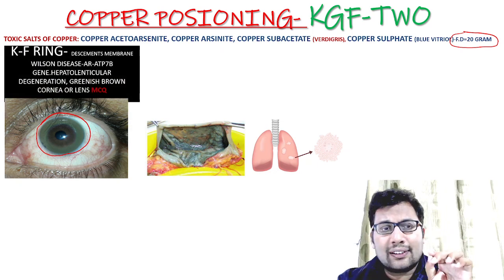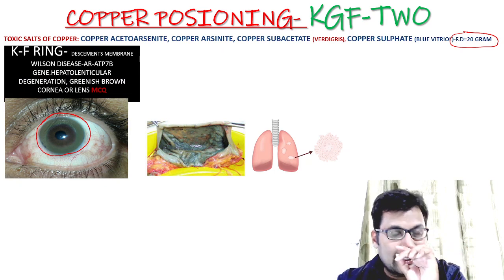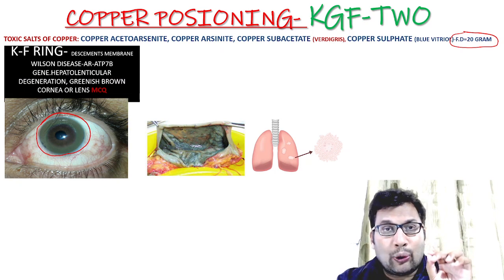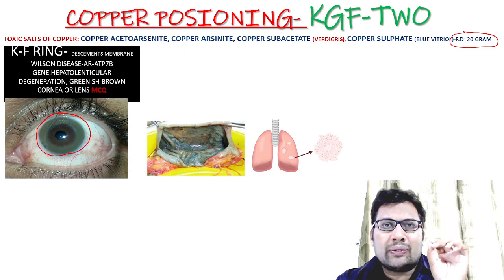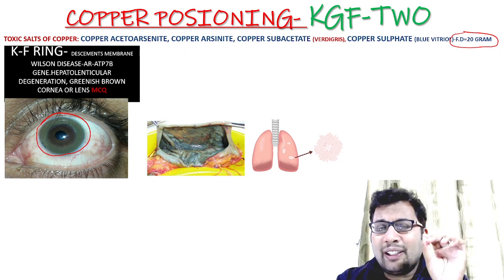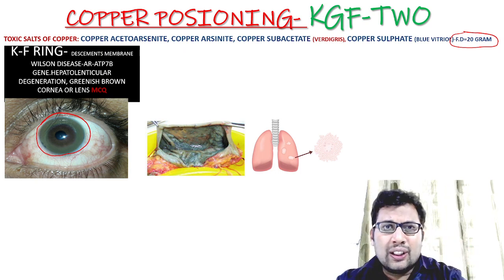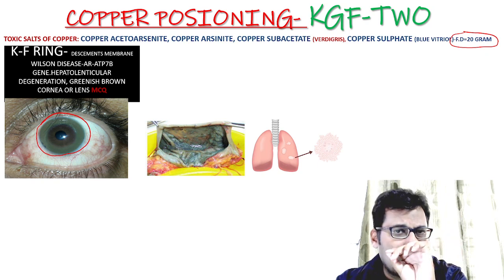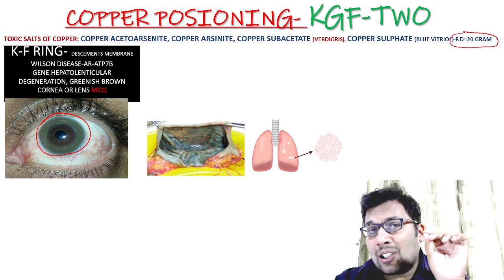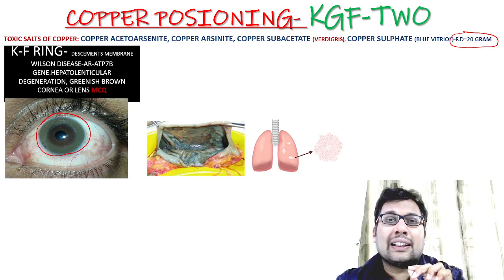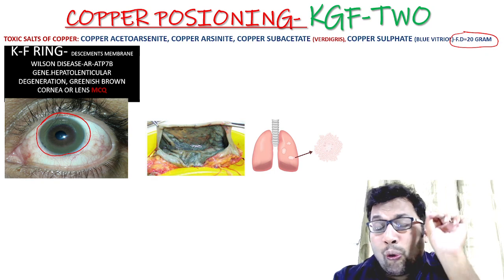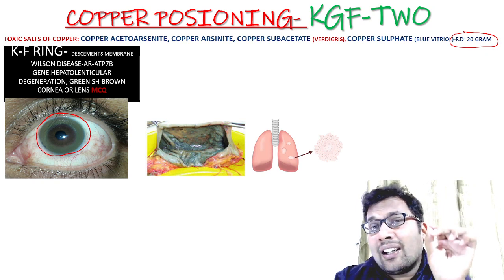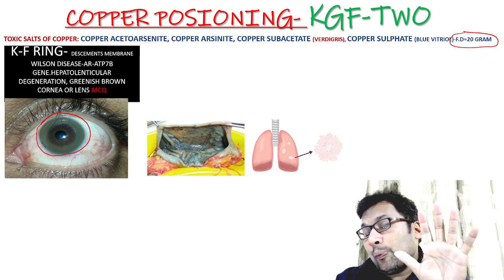Wilson disease involves an ATP7B gene defect with hepatolenticular degeneration and greenish-brown corneal deposits. G in the mnemonic stands for Granuloma of the lungs due to copper poisoning, known as Vineyard Sprayer's Lung Disease — this can be an MCQ.